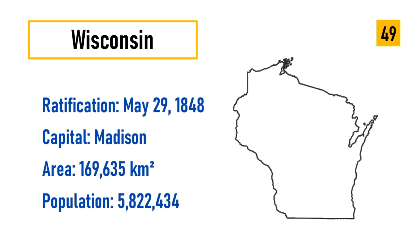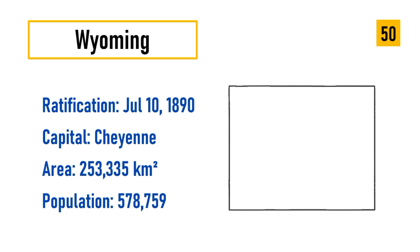Number 49: Wisconsin, ratification May 29, 1848, capital Madison, area 169,635 square kilometers, population 5,822,434. Number 50: Wyoming, ratification July 10, 1890, capital Cheyenne, area 253,335 square kilometers, population 578,759.